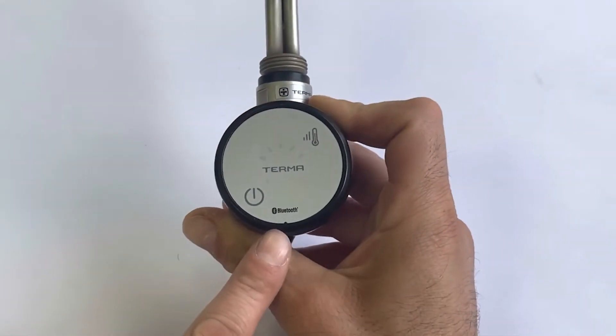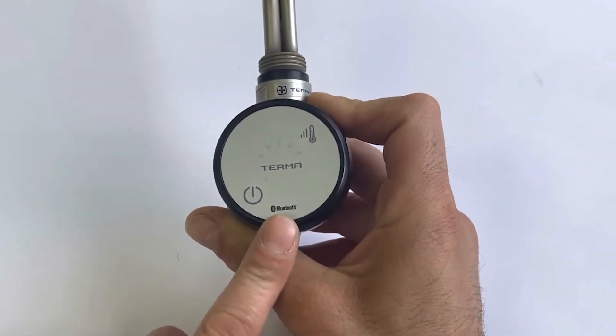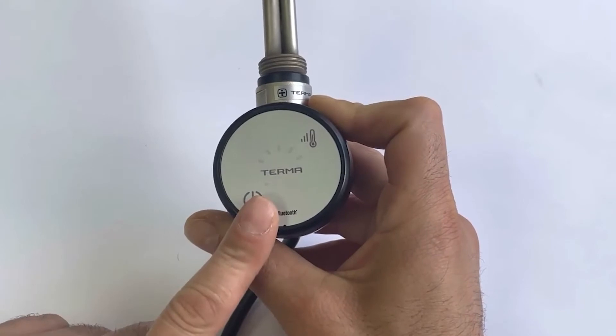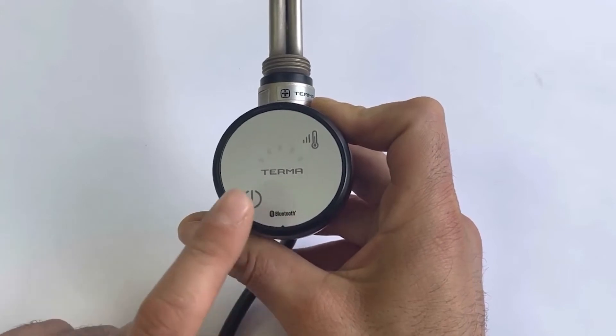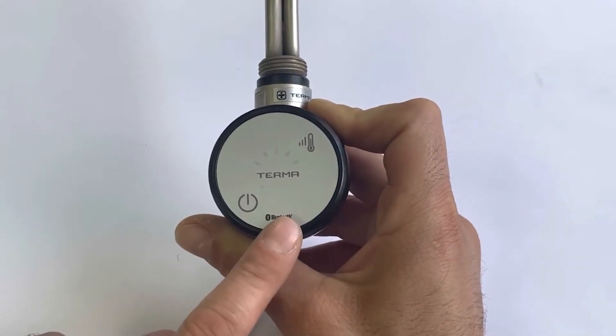This element can connect to your smartphone or tablet via Bluetooth, and you can control the element according to room temperature or radiator surface temperature. We also have two manual buttons on the controller.